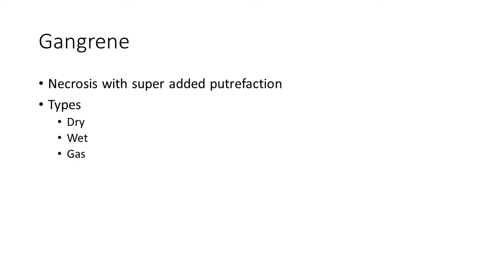Gangrene is defined as necrosis with superadded putrefaction — there is death followed by decay. There are three types of gangrene: dry, wet, and gas.